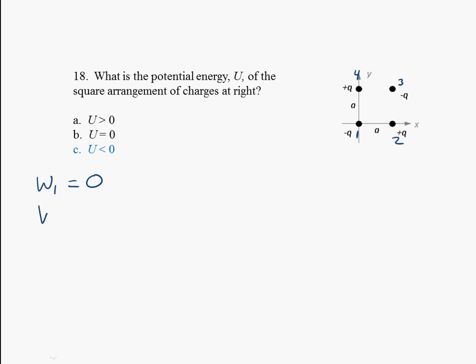The work to bring in charge two, well, the work done by the electric field in this case is going to be positive because it wants to come in, so that means the potential energy is going to be negative. So we're going to get a minus k q q over a. That's all there is.